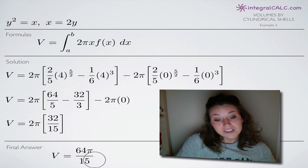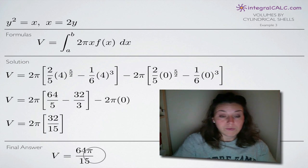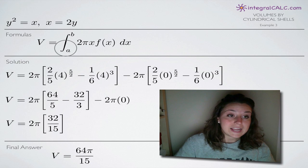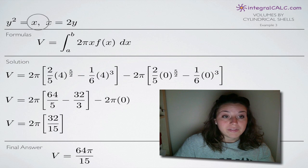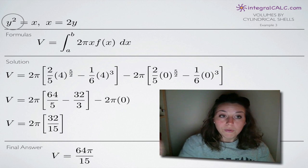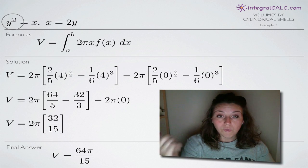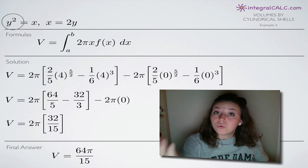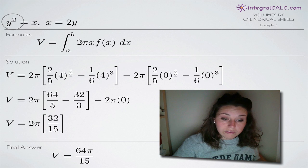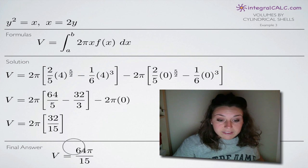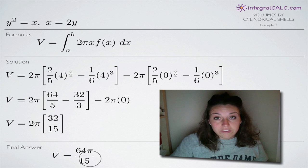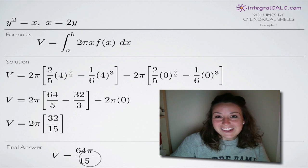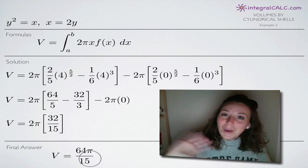So what this tells us is that when we rotate both of these functions around the y-axis, the area created between those two curves is 64π/15. I hope that video helped you guys, and I'll see you in the next one. Bye!